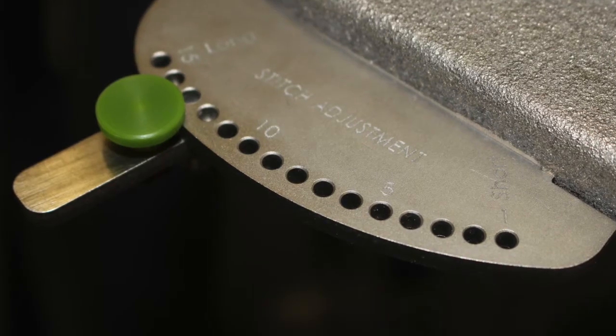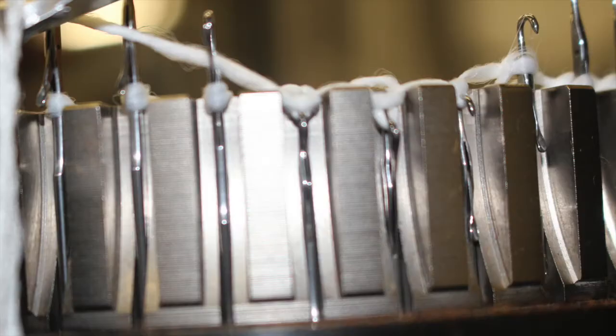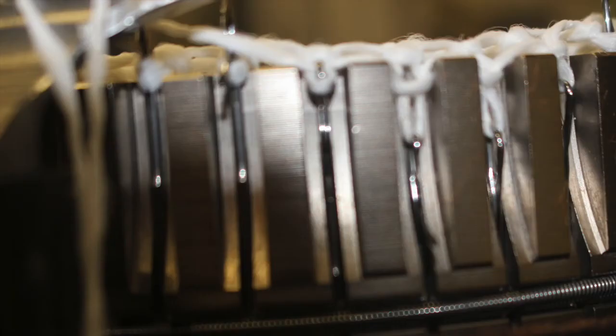The stitch length adjustment feature is accurate and repeatable. Stitch length is determined by the distance the needle travels below the top surface of the cylinder. The longer the distance, the looser the fabric.